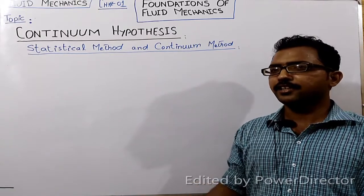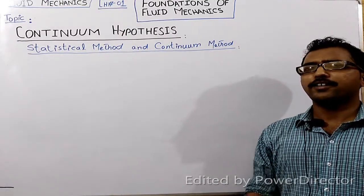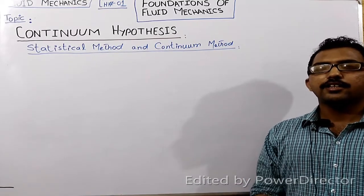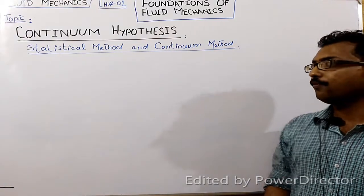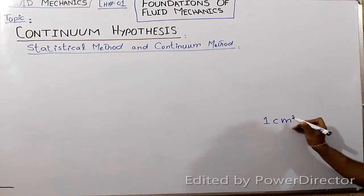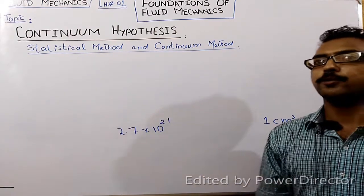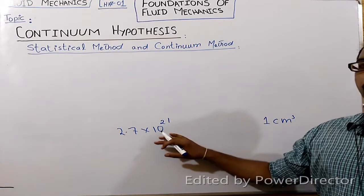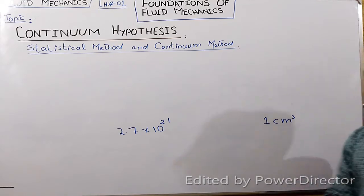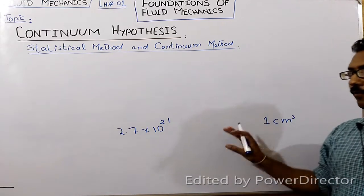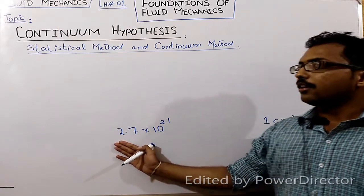If we want to derive the equations that govern fluid motion, we have to apply the laws of dynamics to those molecules. This technique is called the statistical method, which is used in statistical mechanics and the kinetic theory of gases. But in fluid mechanics we cannot use the statistical method — for example, a cubic centimeter of air contains about 2.7 × 10²¹ molecules, and for liquids the number is even larger.